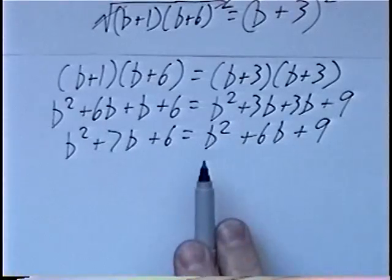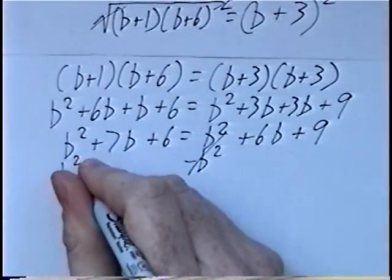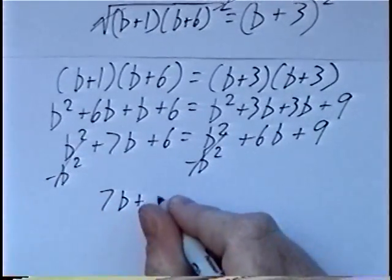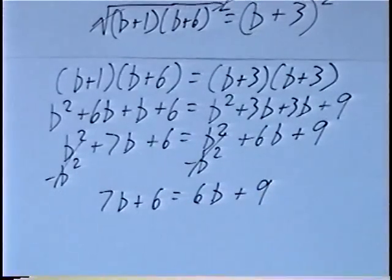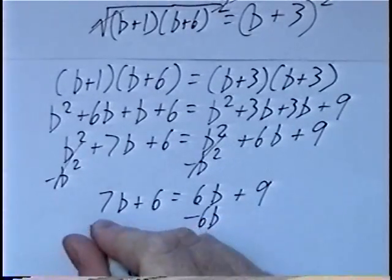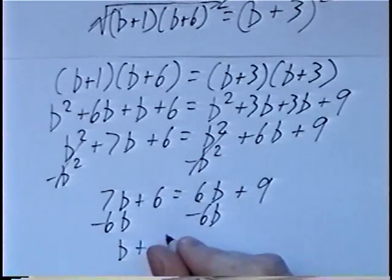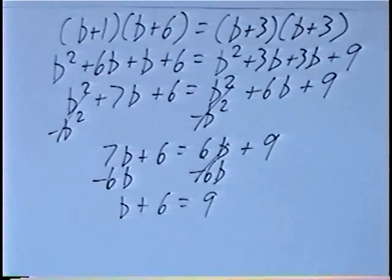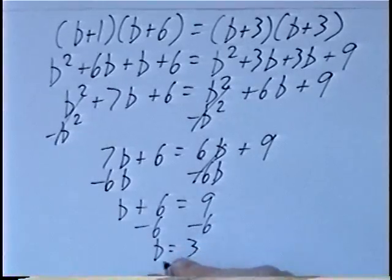Subtracting b squared on both sides cancels the b squared terms, leaving a single variable b to solve for. Subtracting: 7b minus 6b is b plus 6 equals 9. Subtracting 6, we get the answer b equals 3.